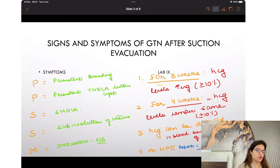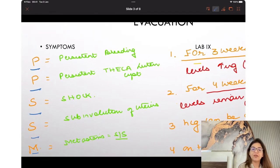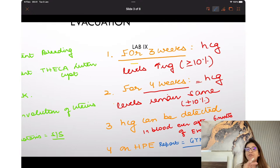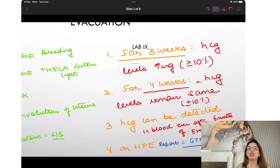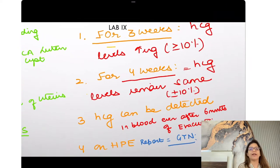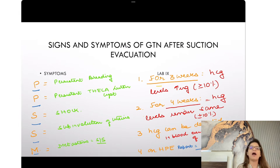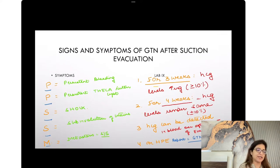These are the signs and symptoms of GTN after suction evacuation — remember PSM. The four lab investigations are: HCG increasing more than 10% over 3 weeks; HCG levels remaining the same over 4 weeks; HCG detectable after 6 months; and histopathological report confirming GTN. This means the patient has developed GTN, either invasive mole or choreocarcinoma — most common after molar pregnancy is invasive mole.